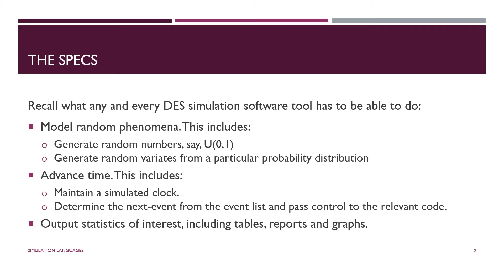Assuming we're using the next-event approach to managing time, which we just about always are, the software tool has to be able to manage a list of event notices, determine the next event to occur, and pass control to the routine that executes what has to be done at the time of that event. These are events in a discrete event system where the system changes at discrete points in time. Finally, we need to be able to output statistics including time statistics.